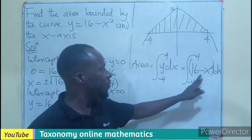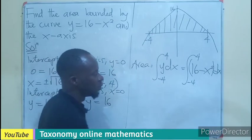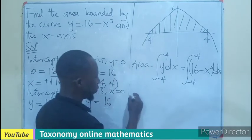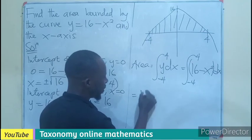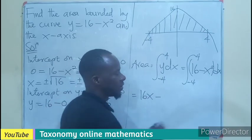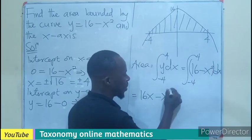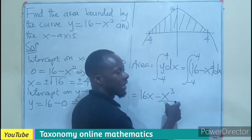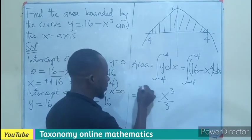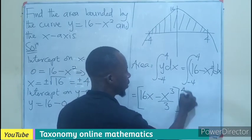If we perform this definite integral, the area will be derived. So what do we do? A constant, we introduce the variable. So area is going to be 16x minus, we are going to increase the power by 1 to become x to the power 3 divided by the same power. There is not going to be any arbitrary constant since it is definite. So minus 4 and 4.